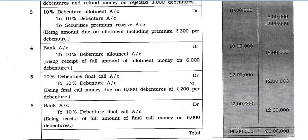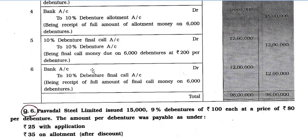Entry 5: 10% Debenture Final Call account Rs. 12,00,000 to 10% Debenture account Rs. 12,00,000 — being final call money due on 6,000 debentures at Rs. 200 per debenture. Entry 6: Bank account debit Rs. 12,00,000 to 10% Debenture Final Call account Rs. 12,00,000 — being receipt of full final call money on 6,000 debentures.